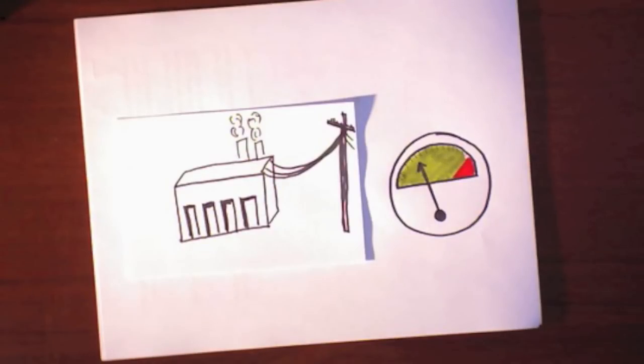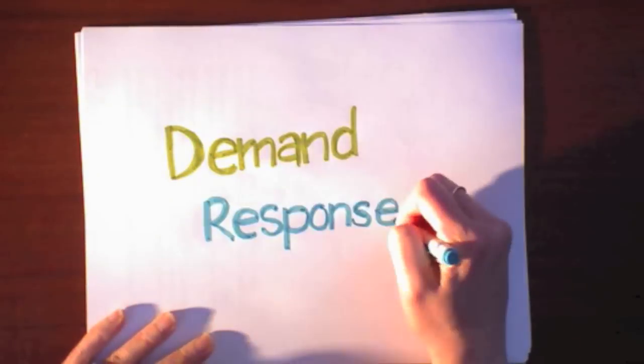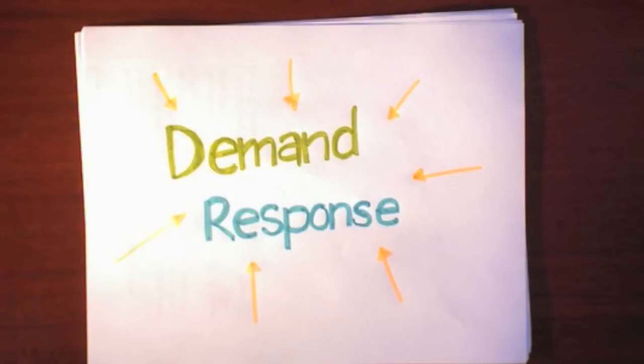But increasingly, things on the grid are starting to go two ways. For example, there are companies who are helping big consumers install technology that will help them automatically conserve energy when the grid is stressed out. This is known as demand response.